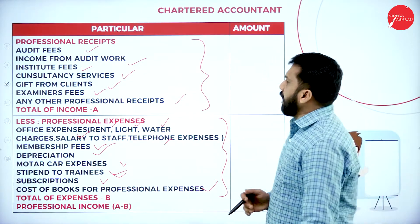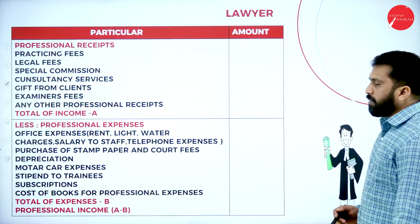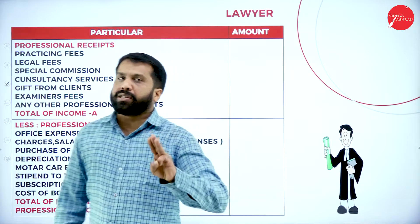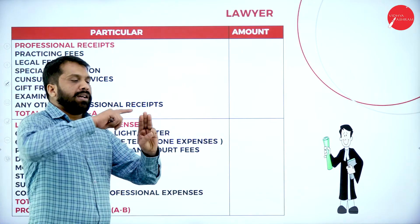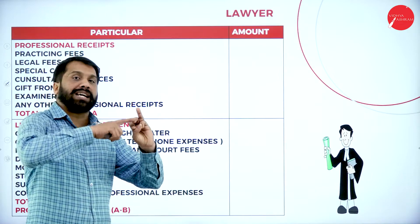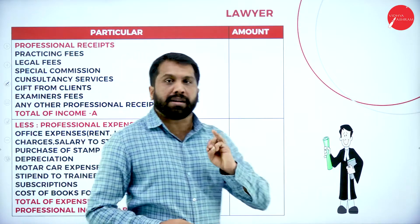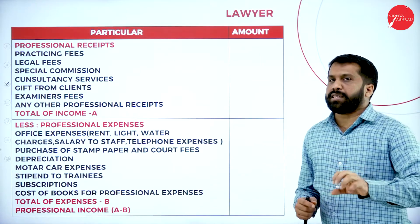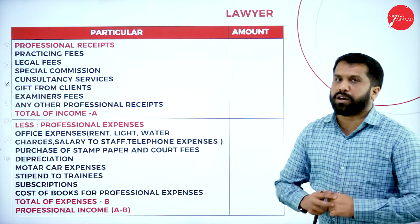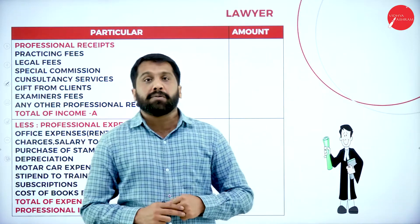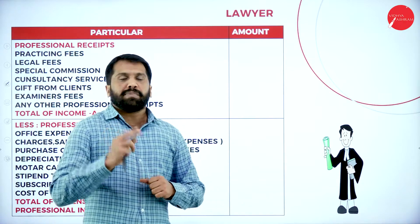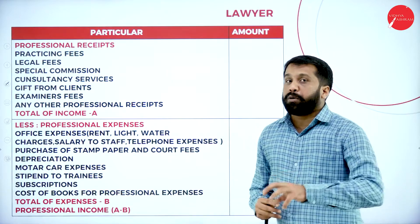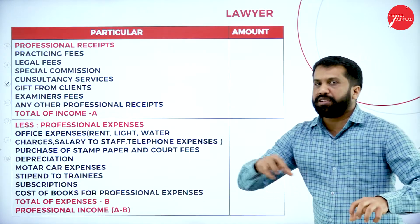Now we move to the lawyer profession — shift your profession, you are no longer a CA. Now you are a lawyer. Being a lawyer, what are your receipts and expenditure? These are professional receipts and professional expenditure. Professional receipts include practicing fees, legal fees, and special commission.